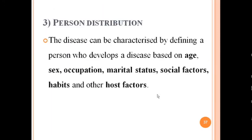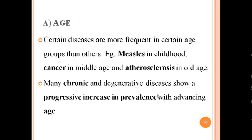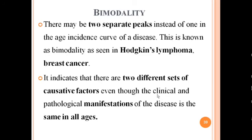Person distribution involves characterizing disease by defining who develops the disease based on age, gender, occupation, marital status, social factors, habits, and other host factors. Age is important — measles is a disease of childhood, cancer occurs in middle age, and atherosclerosis in middle to older age. Many chronic degenerative diseases show progressive increases in prevalence with advancing age. Some diseases may follow a bimodality pattern, with two separate peaks in age-incidence curves. For example, Hodgkin's lymphoma and breast cancer have two separate peaks.